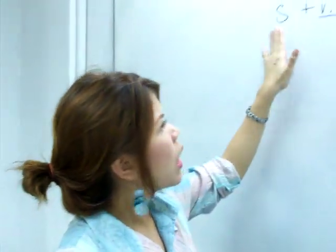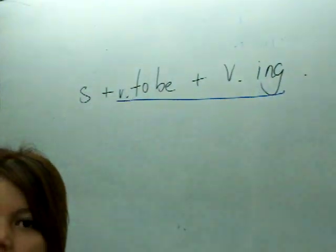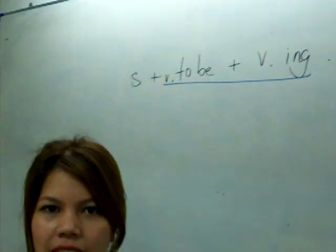Hello, welcome to Thai language lesson. Let's start with how to make a Thai sentence using the English present continuous structure: subject, verb to be, and verb-ing — meaning the subject is doing something right now. For example: I am teaching, I am eating, I am studying.